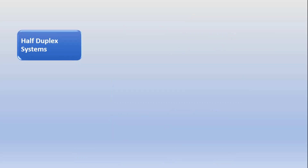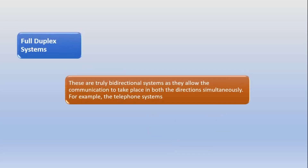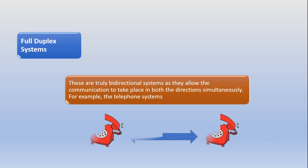Moving to the next one — the half duplex system. These systems are bidirectional, but they cannot transmit and receive signals simultaneously, like a walkie-talkie. The last part is the full duplex system. These are truly bidirectional systems, as they allow communication to take place in both directions simultaneously, like a telephone. The exchange of information can be done by both ends.